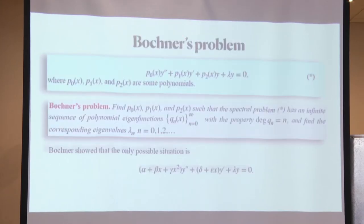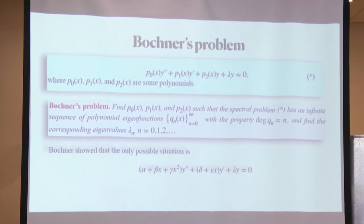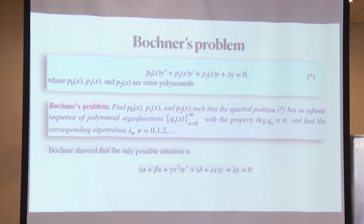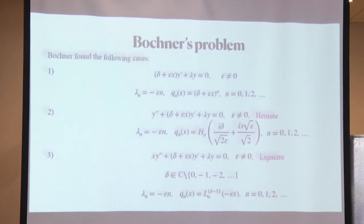Here his problem is rewritten. We have an operator and a differential eigenvalue problem. His problem was to find coefficients P0, P1, P2 such that this problem has an infinite sequence of polynomial eigenfunctions with the property that the nth polynomial has degree n. He showed that this is the only possible situation — if P0 has degree more than 2 or P1 has degree more than 1, then a solution to this problem is impossible.